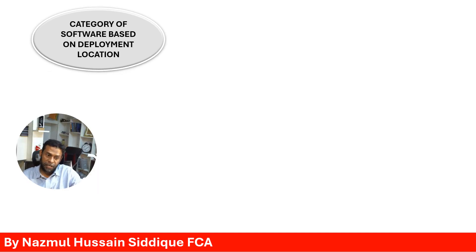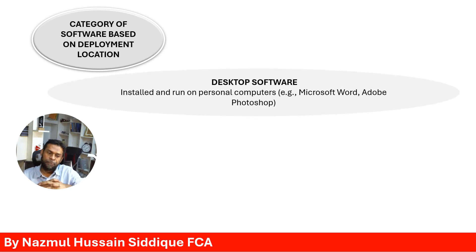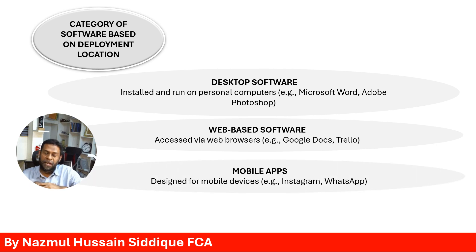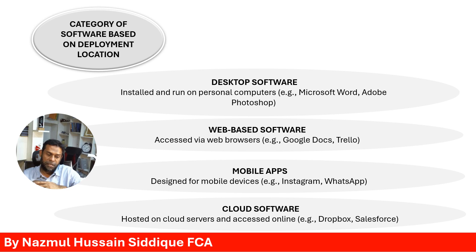Software can also be categorized based on deployment location. Desktop software is installed and run on personal computers — examples include Microsoft Word and Adobe Photoshop. Web-based software is accessed via web browsers — examples include Google Docs and Trello. Mobile apps are designed for mobile devices, such as Instagram or WhatsApp. Cloud software is hosted on cloud servers and accessed online — examples include Dropbox and Salesforce.